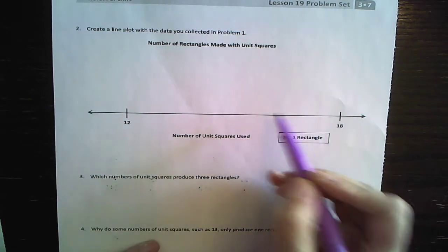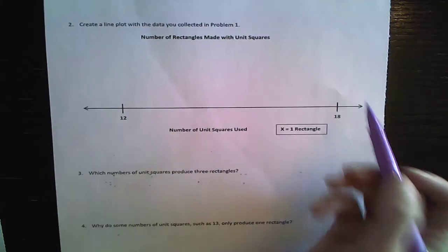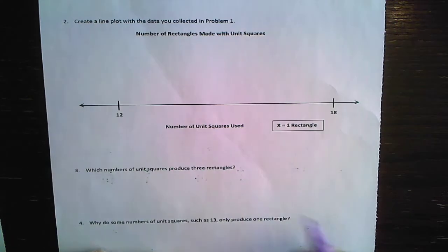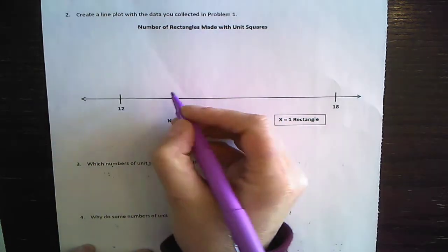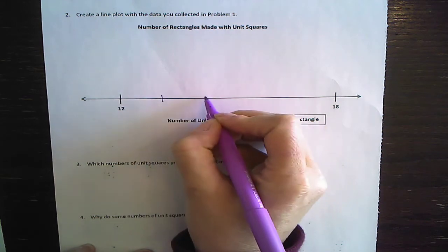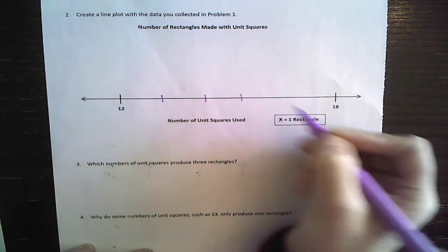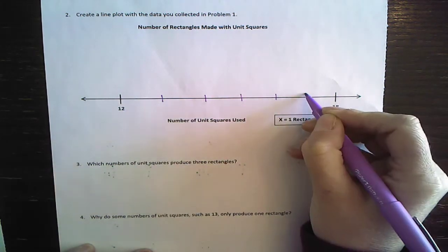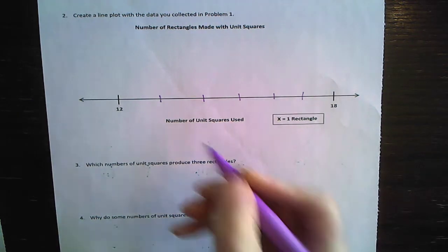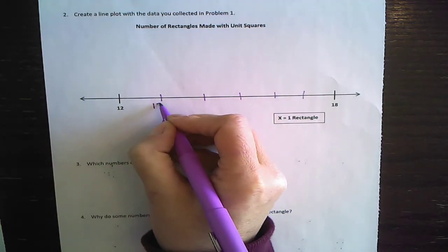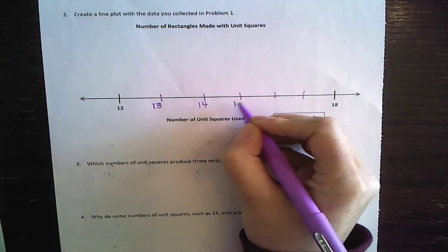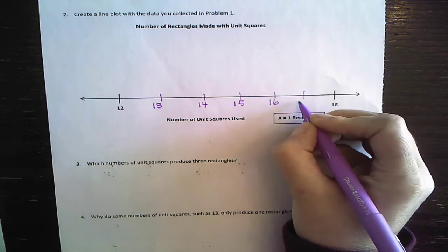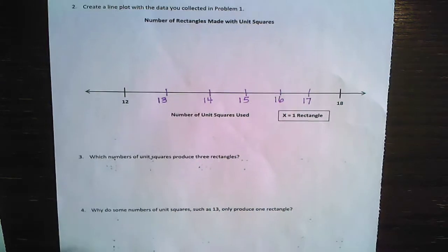So 17, did we do 17? We must have. Yeah, we did. 18, 17, 16, 15, 14, 13. Just trying to figure out how to spread these out so that they're relatively even. 13, 14, 15, 16, 17. I'm good with that. And let's go ahead and label these little matches. 15, 16, and 17. Awesome.